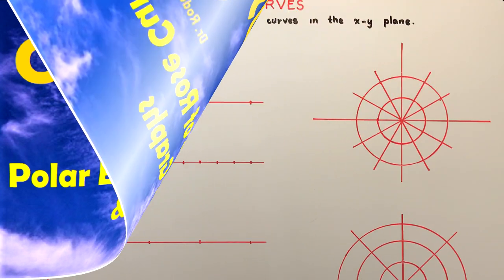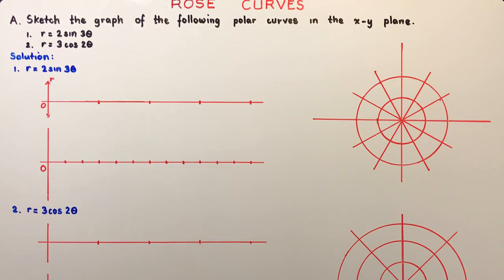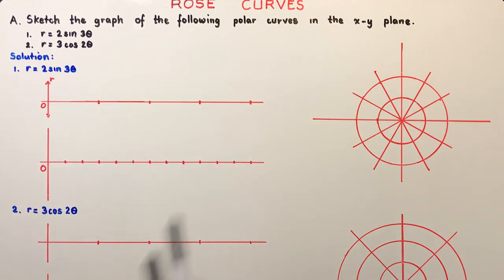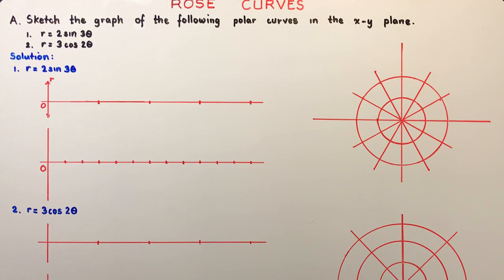In this video I will be discussing one of the popular polar curves which is the rose curve. We will sketch the graph of the following polar curves in the xy plane. Number one, we have r equals 2 sine 3 theta.